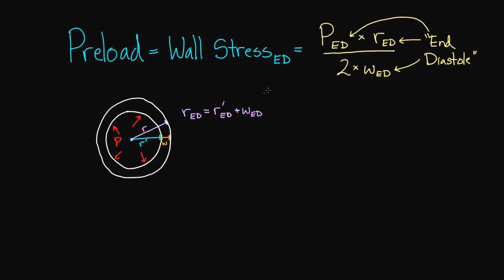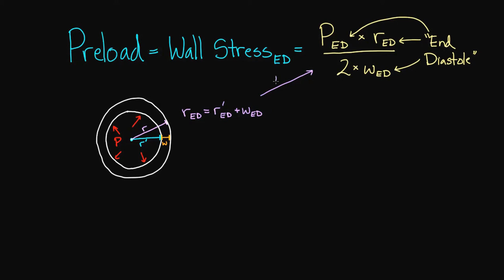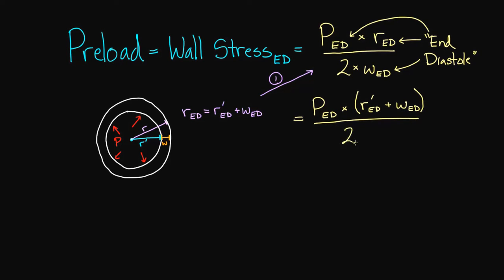I can immediately plug that equation in as our first change. Preload equals pressure times the quantity r prime plus wall thickness at end of diastole, all divided by 2 times w at end of diastole. That's our new equation, borrowing from the cross-section picture.